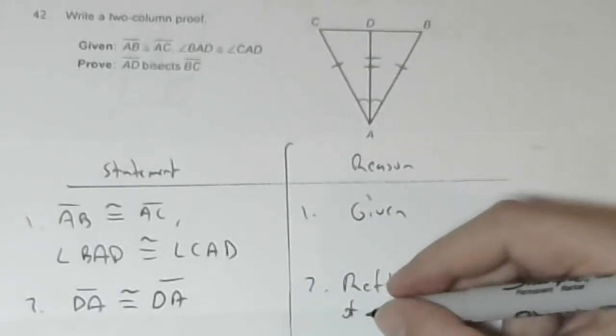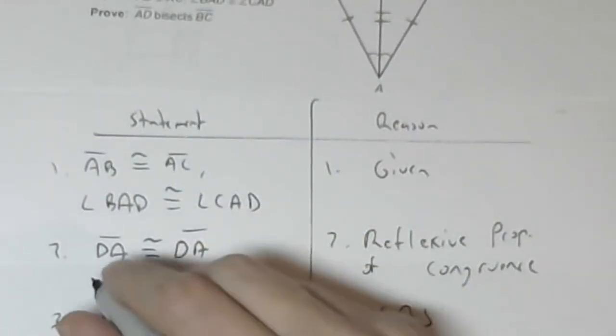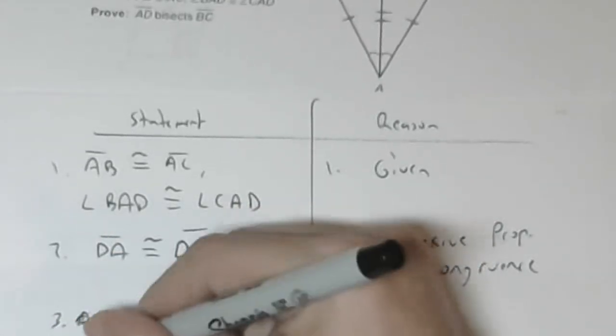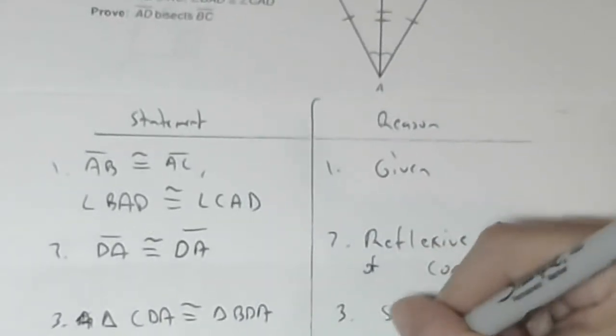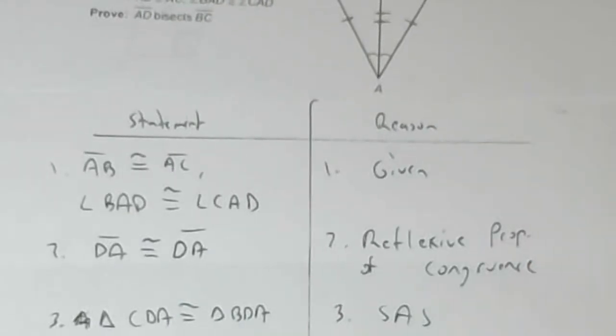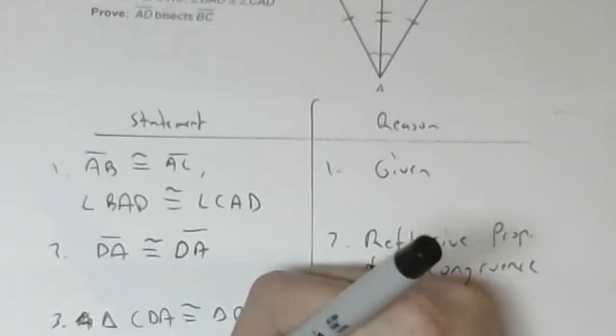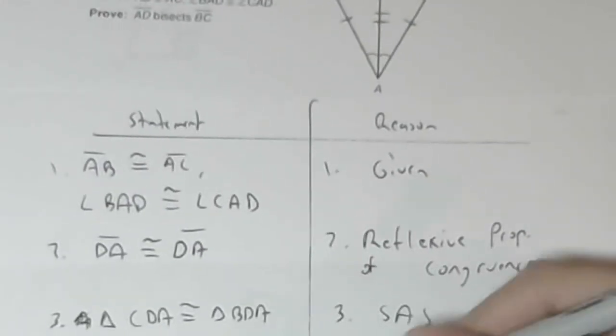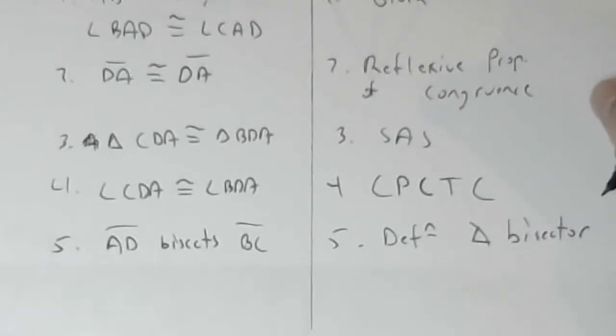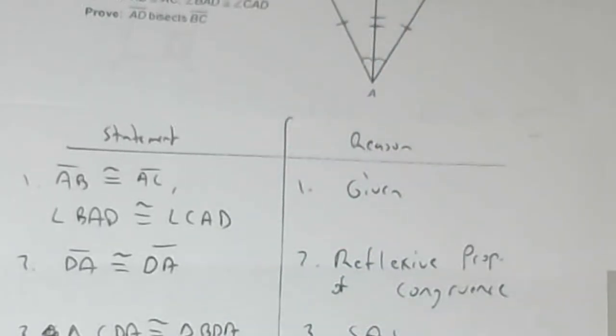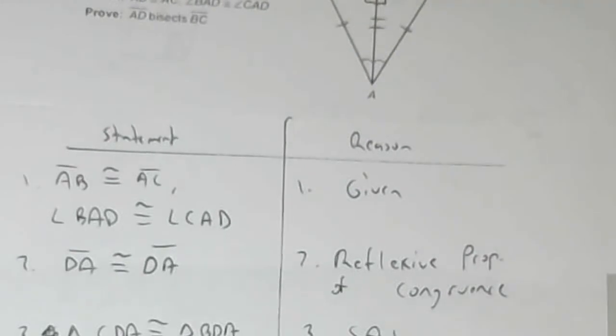Triangle CDA is congruent to triangle BDA, and that's side angle side. Angle CDA is congruent to angle BDA, and that's corresponding parts of congruent triangles are congruent. And then I'll say AD bisects BC, and that's just definition angle bisector. So basically what we're using is, once we prove congruence, corresponding parts are equal. And because this angle is equal to this angle, then DA is by definition the angle bisector.